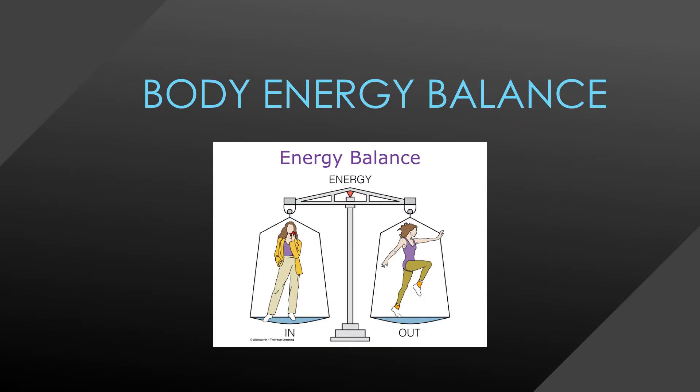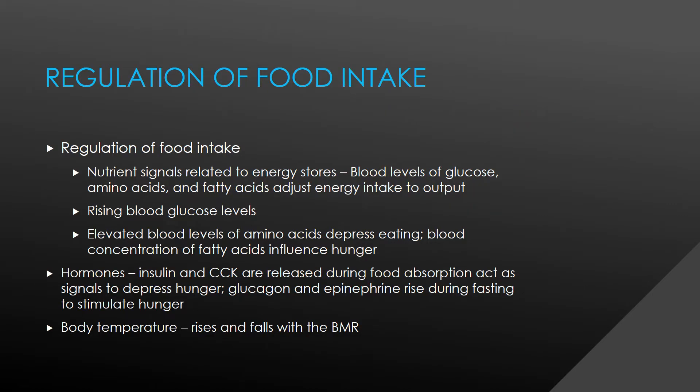Next is body energy balance. Regulation of food intake — nutrient signals related to energy stores: blood levels of glucose, amino acids, and fatty acids adjust energy intake to output. Rising blood glucose levels and elevated blood levels of amino acids depress eating. Blood concentration of fatty acids influences hunger. Hormones insulin and CCK are released during food absorption and act as signals to depress hunger.